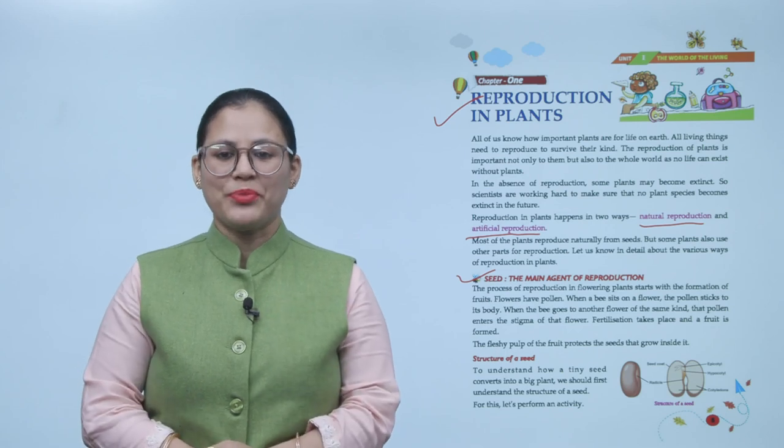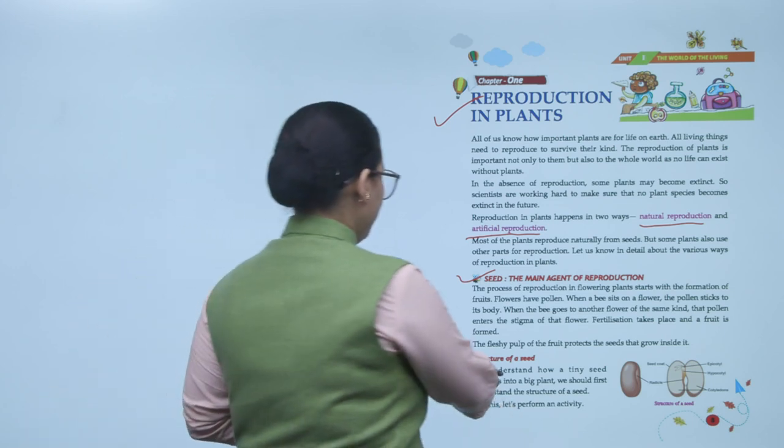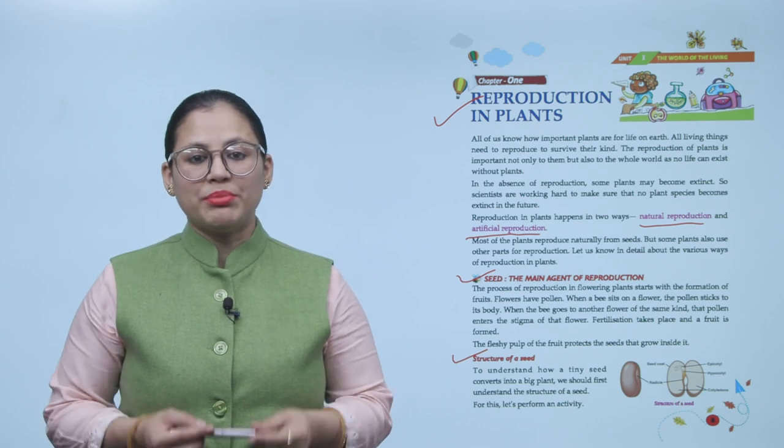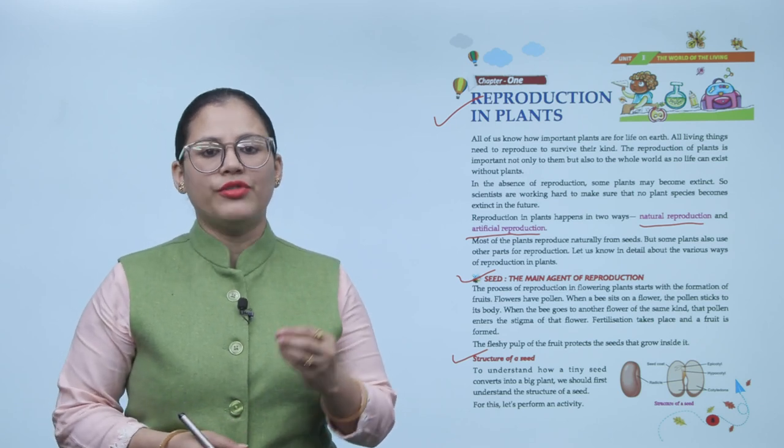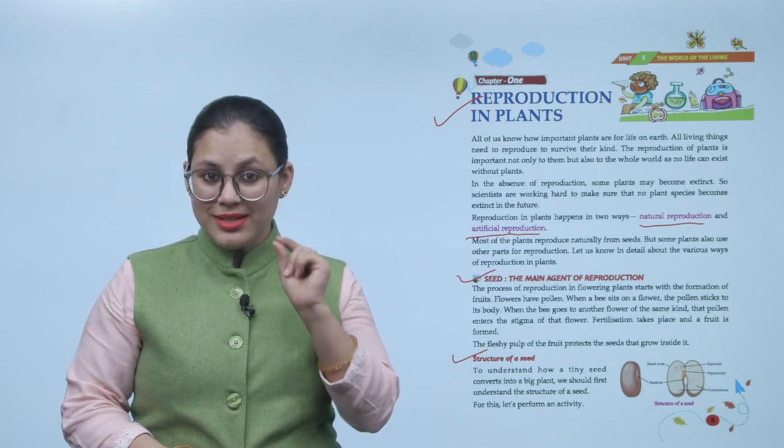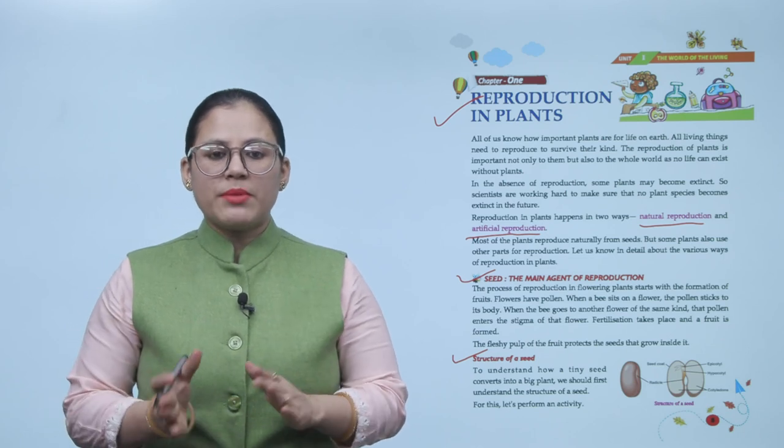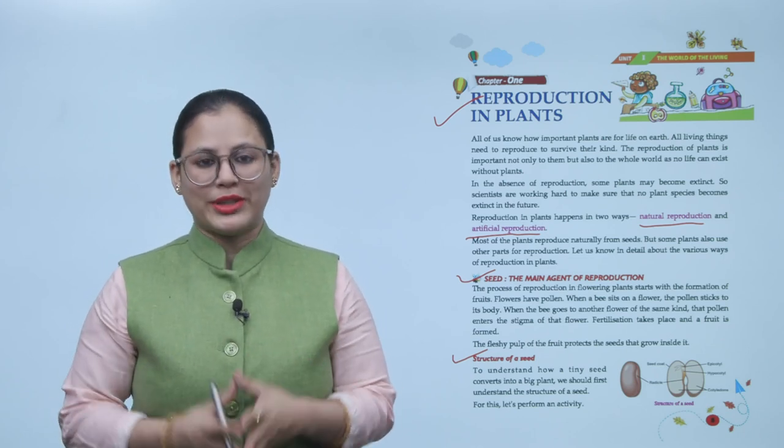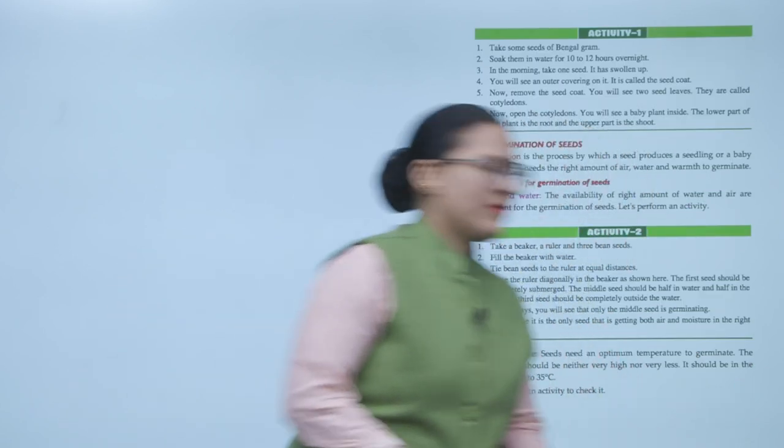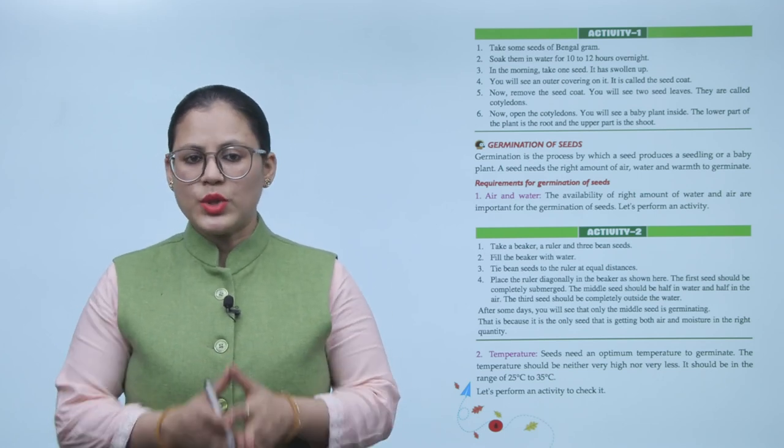Now let's discuss structure of a seed. To understand how a tiny seed converts into a big plant, we should first understand the structure of a seed. For this, let's perform an activity. So dekhiye kis tarah se ek chota sa seed bade se plant pe convert ho jata hai. Wo samajhne ke liye sabse pehle hamein structure jo seed ka wo pata hona chahiye.